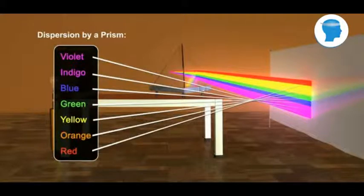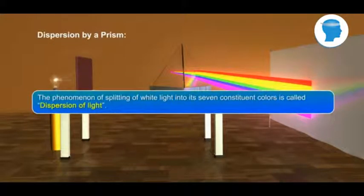That is, violet, indigo, blue, green, yellow, orange and red. This phenomenon is called dispersion of light. The phenomenon of splitting of white light into its seven constituent colours is called dispersion of light.